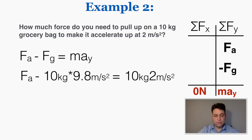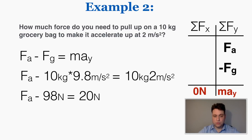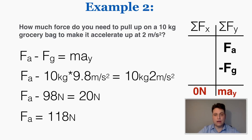When I plug in the force of gravity — 10 times 9.8 — and m times a — 10 times positive 2 — I get fa minus 98 Newtons equals 20 Newtons. So the applied force fa must equal 118 Newtons. To make a 10-kilogram bag accelerate upward at 2 meters per second squared, you need to apply exactly 118 Newtons according to Newton's second law.